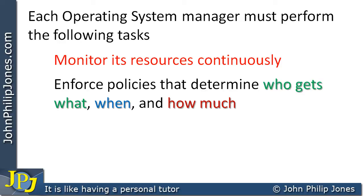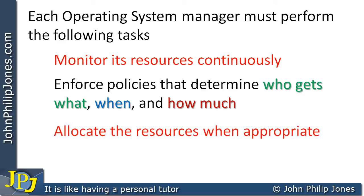Another important task carried out by an operating system manager is to allocate resources when appropriate — that is, when they are needed. A process could be executing and want to print a file, so the device manager will allocate that resource to allow the file to be printed. The process manager will also allocate CPU time when a process has been chosen to execute, saying: you can now have the resource of the central processing unit because you now need to run.